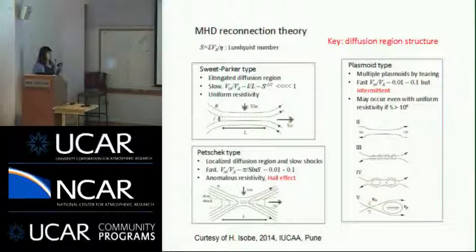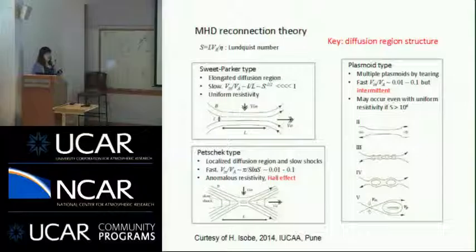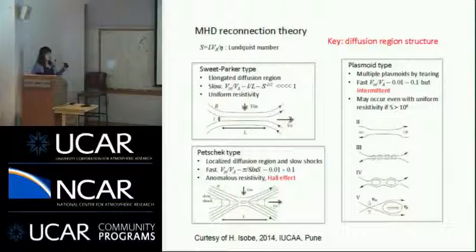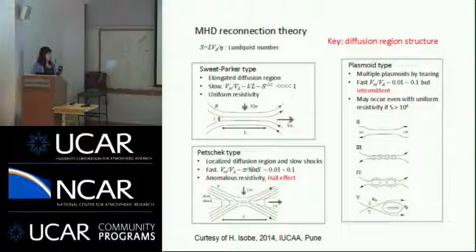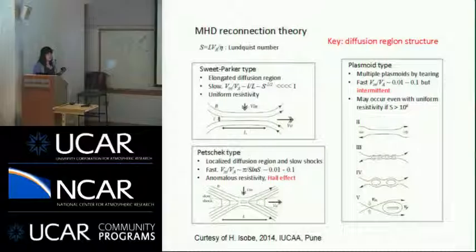Reconnection can happen in many different ways, generally characterized into Sweet-Parker type, Petschek type, and plasmoid mode type. The characteristic of Sweet-Parker reconnection is an extended long current sheet with a pair of Y-points. Its reconnection rate is proportional to one over the square root of the Lundqvist number, also called magnetic Reynolds number. In high Lundqvist number environments such as the corona, Sweet-Parker reconnection can take four years, which is not fast enough to account for events like CMEs and jets.